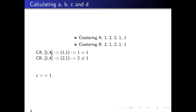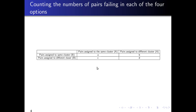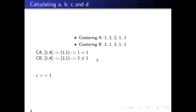Let's look at index one and four. The index (1, 4) corresponds to the pair (1, 1) in cluster A, and the pair (2, 1) in cluster B. The pair in cluster A — one equals one — is equal. The pair in cluster B — two is not equal to one — is different. So C increases by one. C is defined as: the pairs are assigned to the same cluster in A but different clusters in B, which is exactly what we have here.